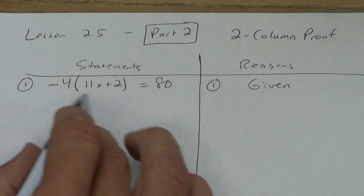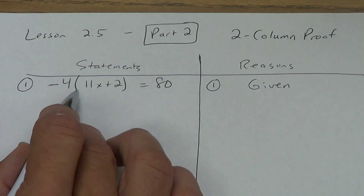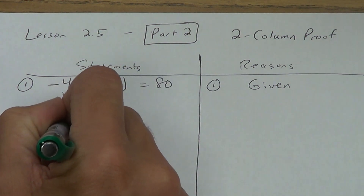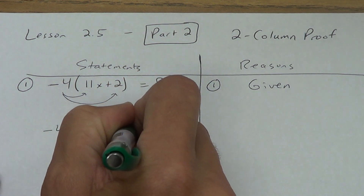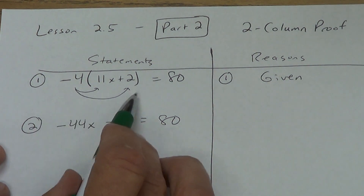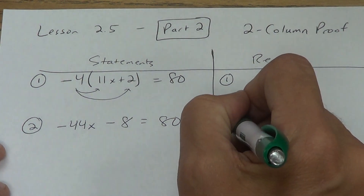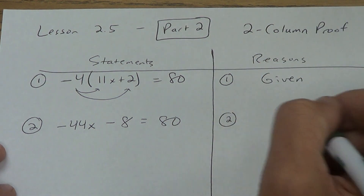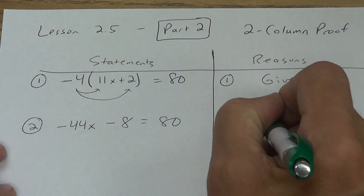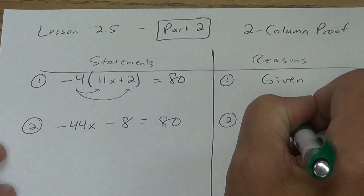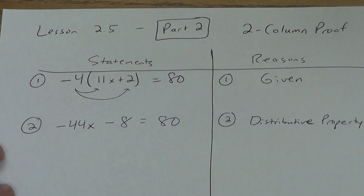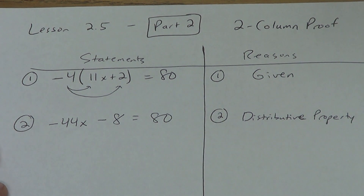What would I do in algebra class to this? I've got parentheses, so I would probably distribute. So negative 44x minus 8 equals 80 — that is my second statement. What tells me I can do this? It's a property. Distributive property. Don't put 'of equality' — if you put 'of equality', I'm going to mark it wrong. You can put 'of multiplication over addition' if you want to.